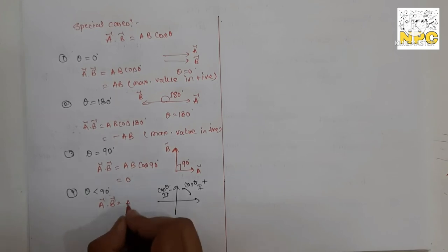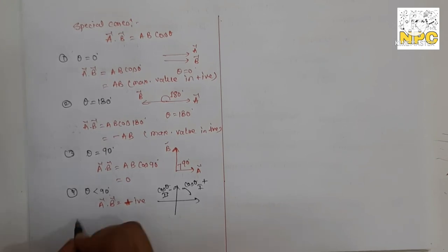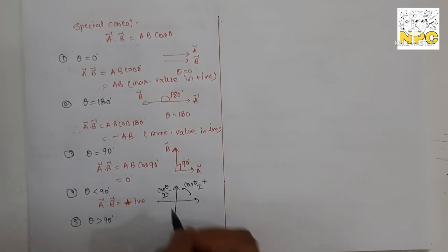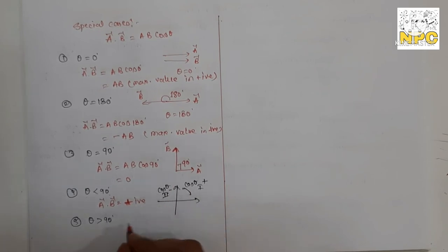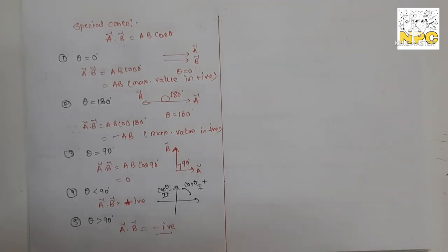Fourth case: when theta is less than 90 degrees, the vectors are in the first quadrant where cos theta is positive, so the dot product a·b·cos theta is positive. Fifth case: when theta is greater than 90 degrees, the value of cos theta is negative (second quadrant), so the dot product gives a negative value. These are all the special cases depending on how theta varies.